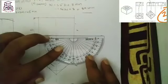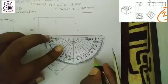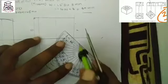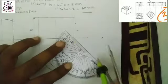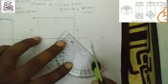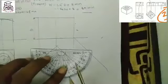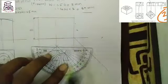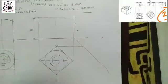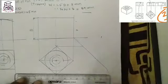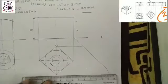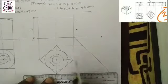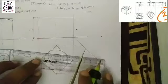Take 45 degrees and draw one inclined line — that is the 45-degree line for the side view. Project this point, and next project this one also.